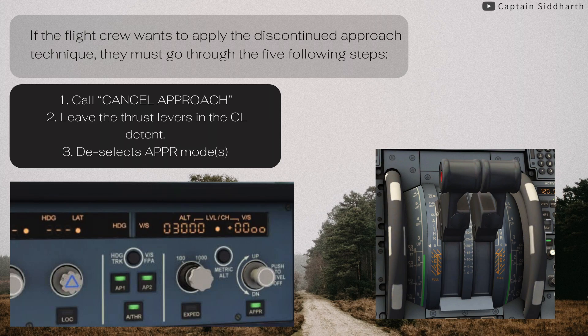If the flight crew wants to apply the discontinued approach technique, they must go through the five following steps. Step 1: Call 'cancel approach.' Step 2: Leave the thrust levers in the climb detent. Step 3: Deselect approach modes.